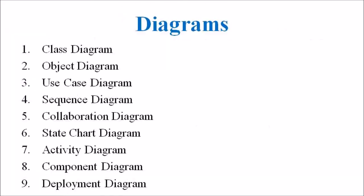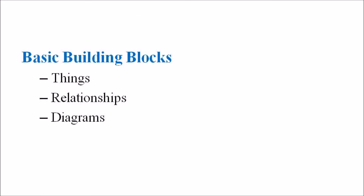Next we are discussing the diagrams. A diagram is a graphical representation of a system, comprising a group of elements generally in the form of a graph. UML includes nine diagrams: class diagram, object diagram, use case diagram, sequence diagram, collaboration diagram, state chart diagram, activity diagram, component diagram and deployment diagram. These three — things, relationships and diagrams — are the major elements of the building blocks of UML.